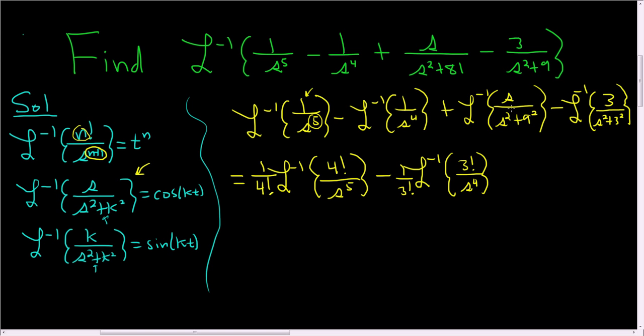And this guy is good to go. We have the s, so we know it's cosine. So it's going to be plus cosine of 9t, because k is equal to 9, right? The k is 9 in this case.